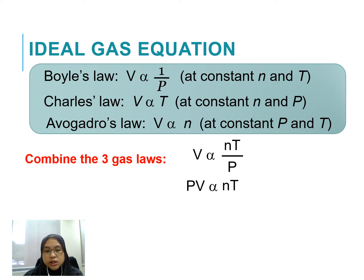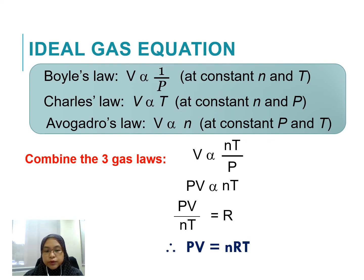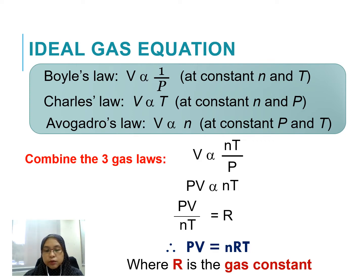Rearranging this equation gives us PV directly proportional with nT. If we equate this with a constant R, it gives us PV equals to nRT, where R is the gas constant. PV equals to nRT is called the ideal gas equation.